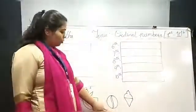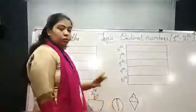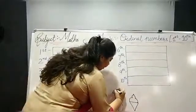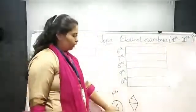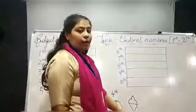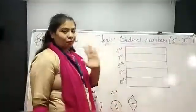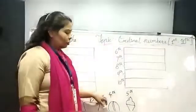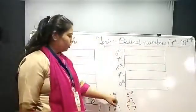Now, 4th position आपको किसकी दिख रही है? Yes, ball. So, 4th हम कैसे लिखेंगे? 4, then ऊपर 'TH'. 4th. Now, 5th position आपको किसकी दिख रही है? Yes, ice cream. 5th हम कैसे लिखेंगे? 5, then 'TH'. From 4th to 10th onwards, we put TH.